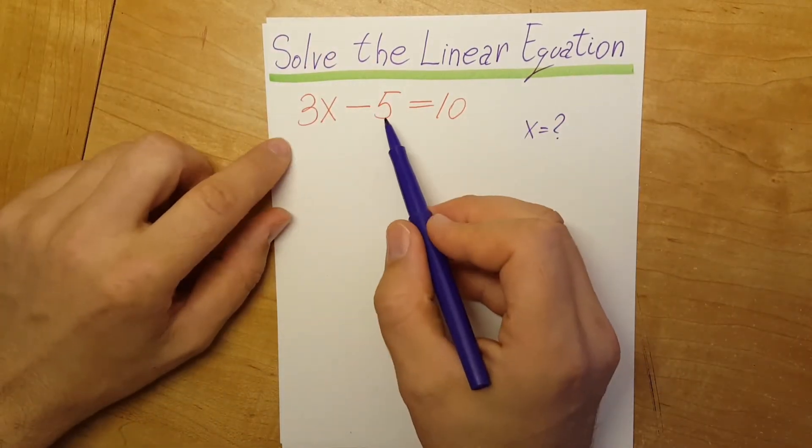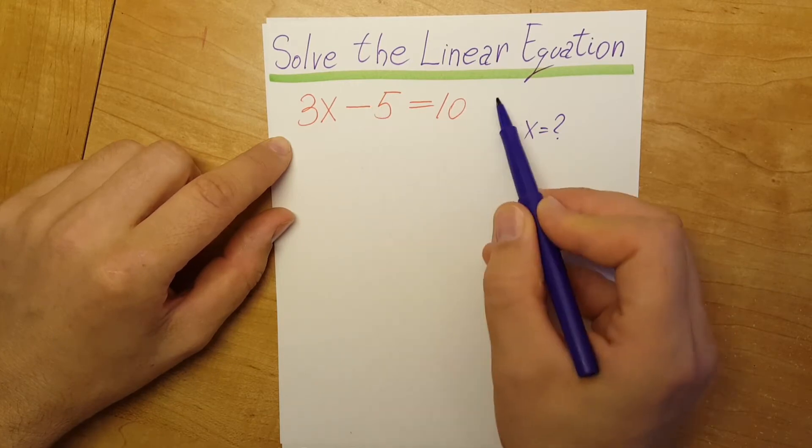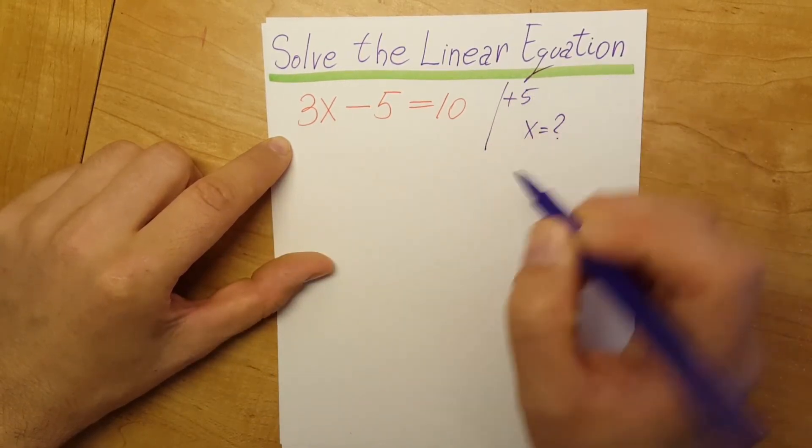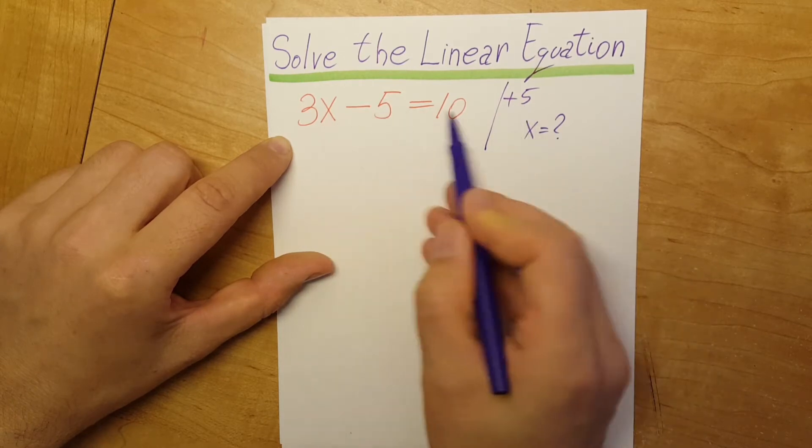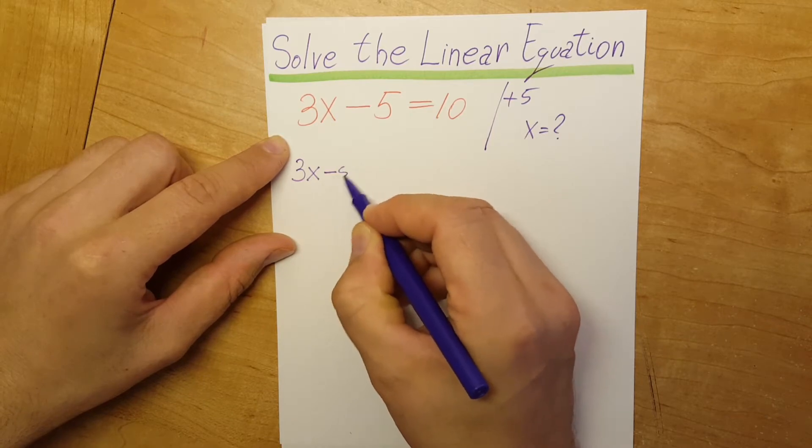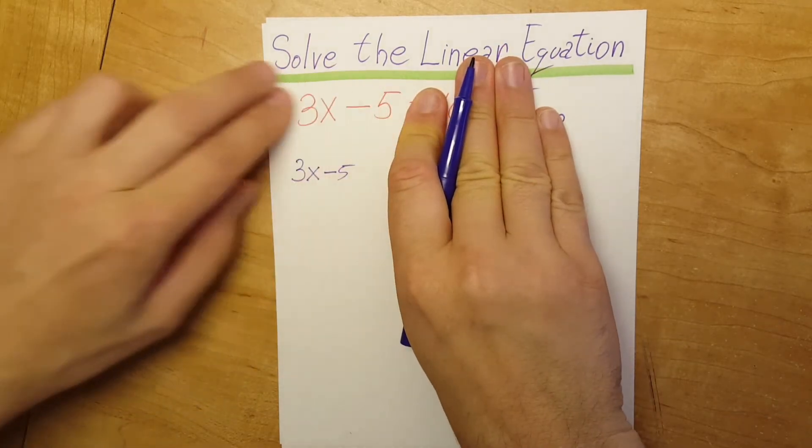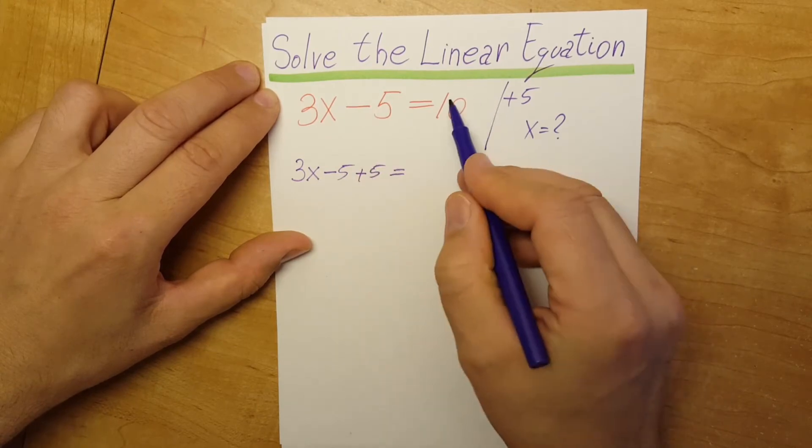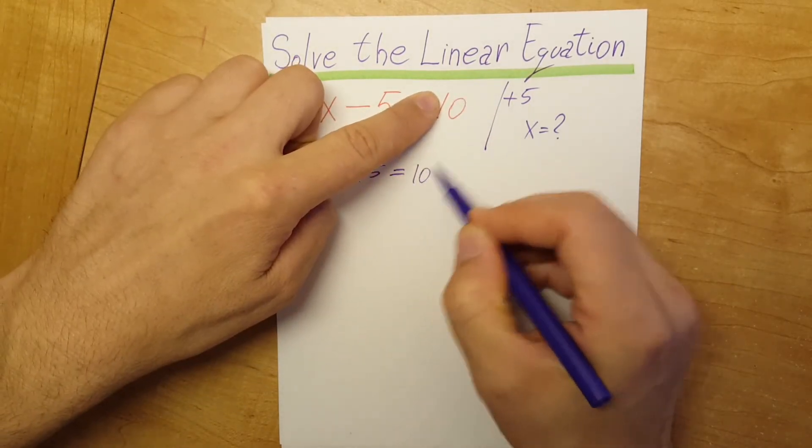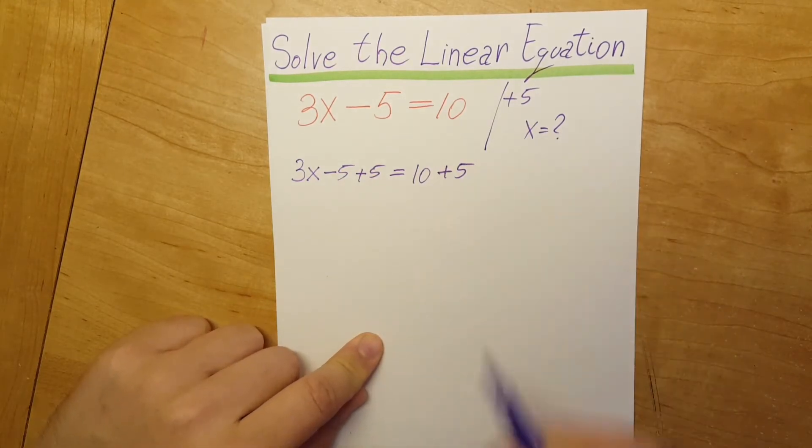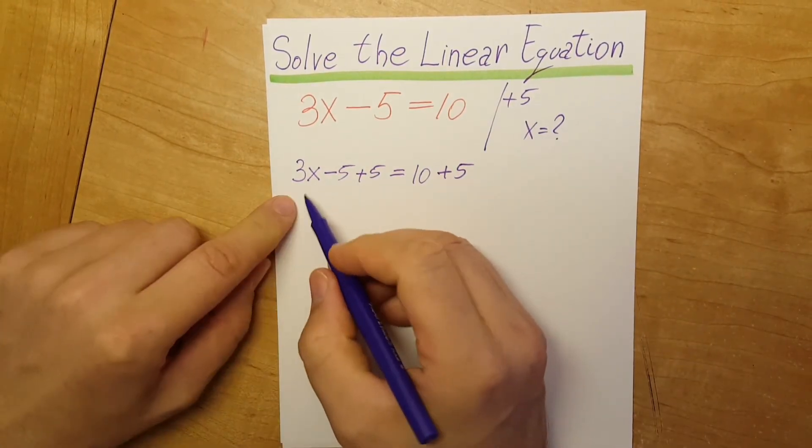I want to get rid of this 5 and put it on the other side. Therefore, I'm going to add plus 5 to both sides of the equation. So we have 3x minus 5 plus 5 equals 10 plus 5. Let's clean it up.